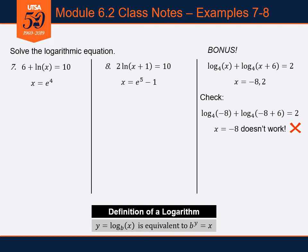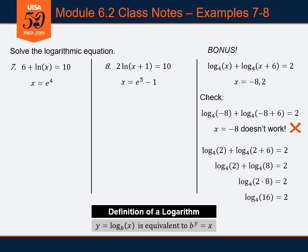Now let's try x equals positive 2. Plugging in: log base 4 of 2 plus log base 4 of (2 + 6), which is log base 4 of 2 plus log base 4 of 8. Combining using the product rule: log base 4 of 16. Since 4 squared equals 16, that equals 2. It checks out — x equals 2 works.